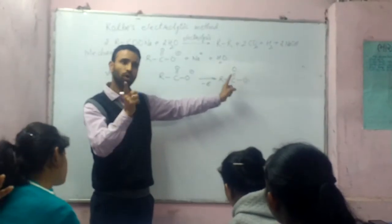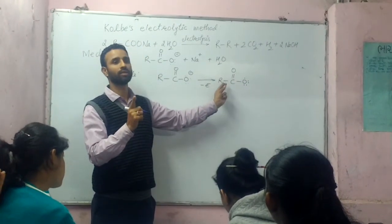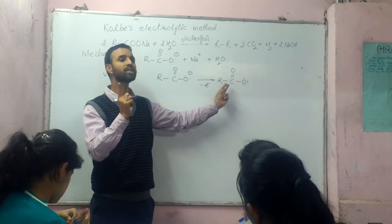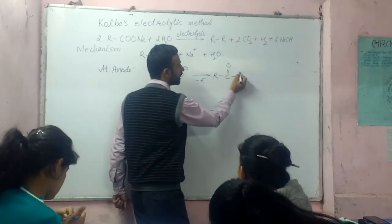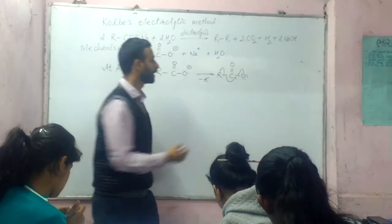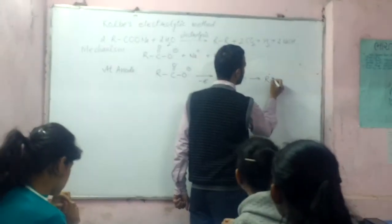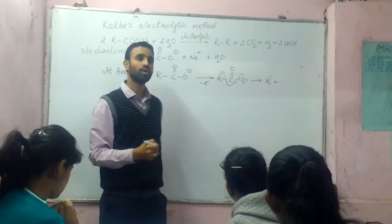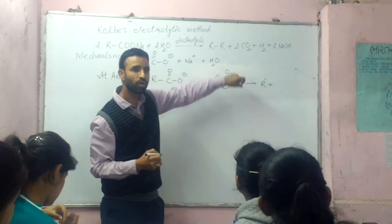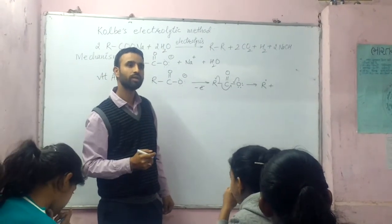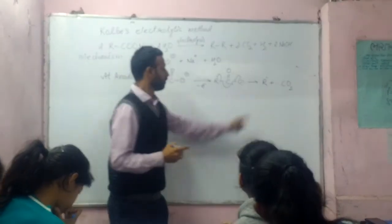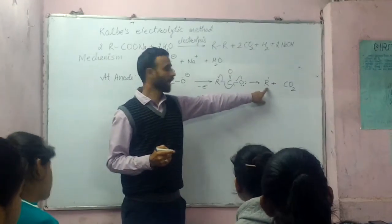When a free radical is formed, it leaves the other bond by homolysis. An electron from each side leads to formation of a double bond — a double bond between carbon and oxygen, i.e., C=O and C=O. That is carbon dioxide. So at the anode, we get an alkyl free radical and carbon dioxide.